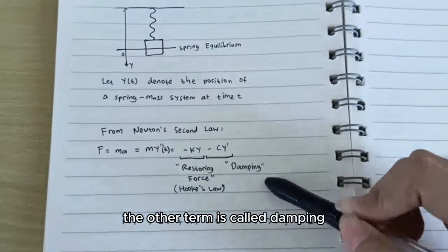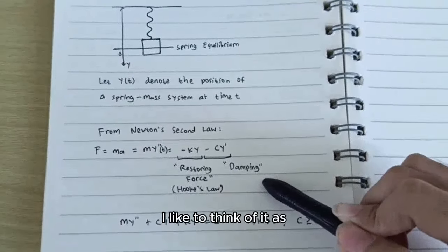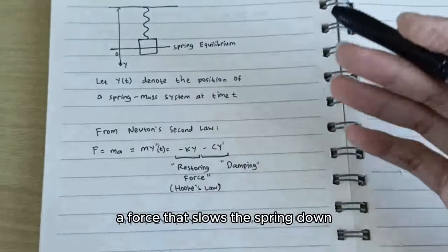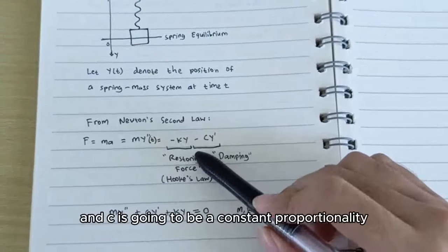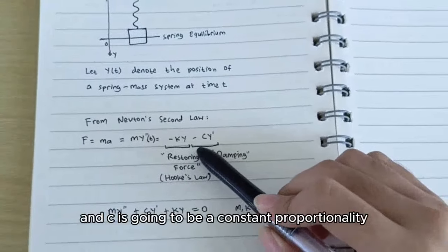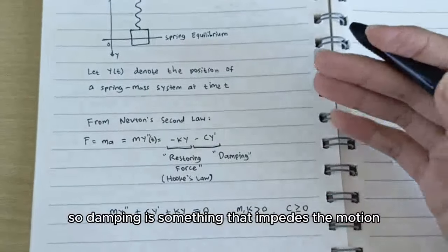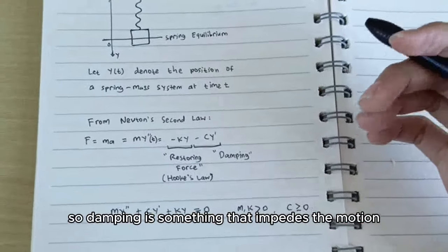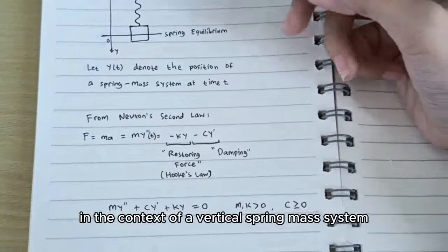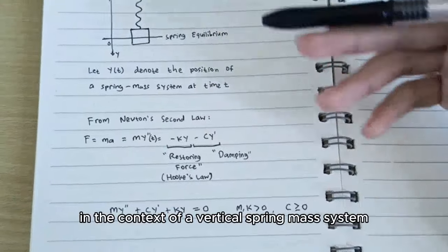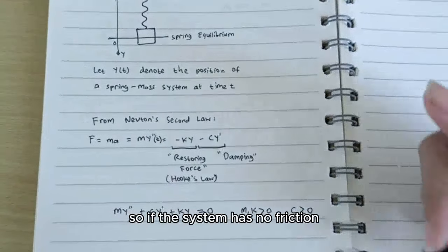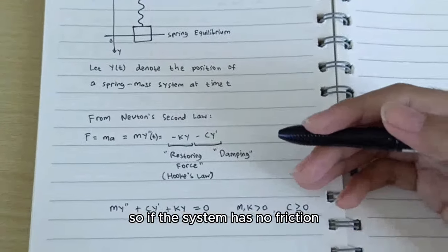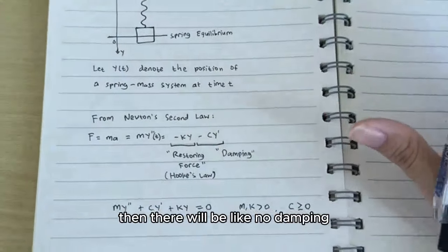The other term is called damping. I like to think of it as a force that slows the spring down, so y prime is the velocity, and c is going to be a constant of proportionality. So damping is something that impedes the motion. In the context of a vertical spring mass system, I like to think of it as the air friction. So if the system has no friction, then there will be no damping.